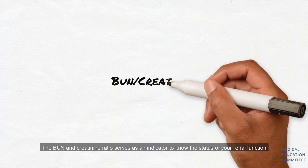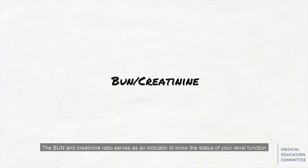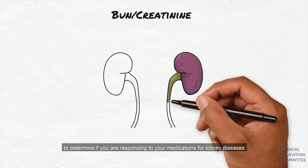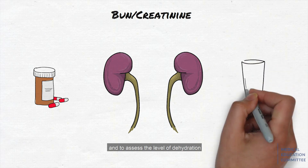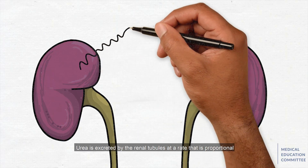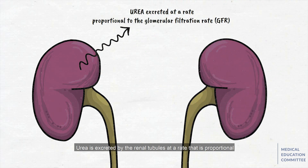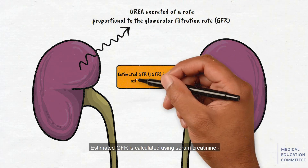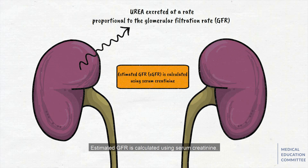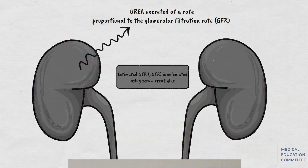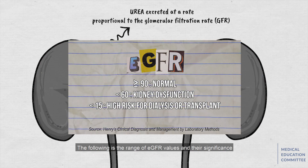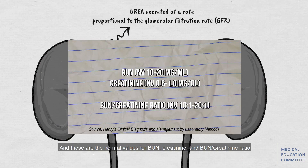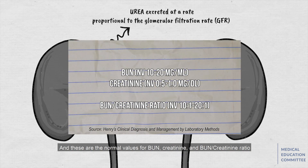The BUN and creatinine ratio serves as an indicator to know the status of your renal function, to determine if you are responding to your medications for kidney diseases, and to assess the level of dehydration. Urea is excreted by the renal tubules at a rate that is proportional to the glomerular filtration rate, or GFR. Estimated GFR is calculated using serum creatinine, and it accounts for individual differences in creatinine levels. The following are the ranges of eGFR values and their significance, along with the normal values for BUN, creatinine, and the BUN-creatinine ratio.